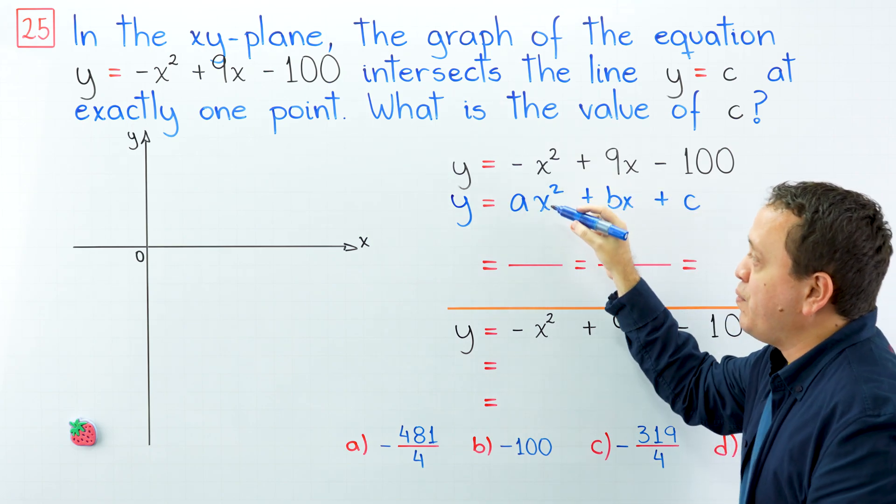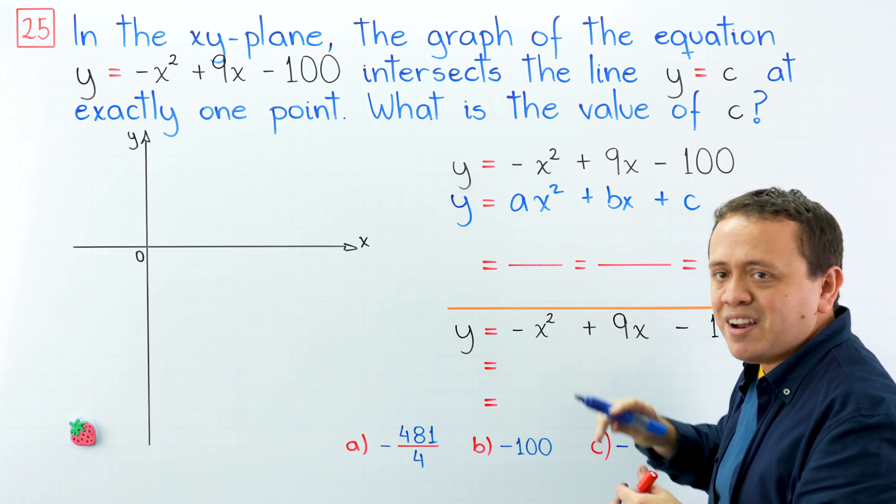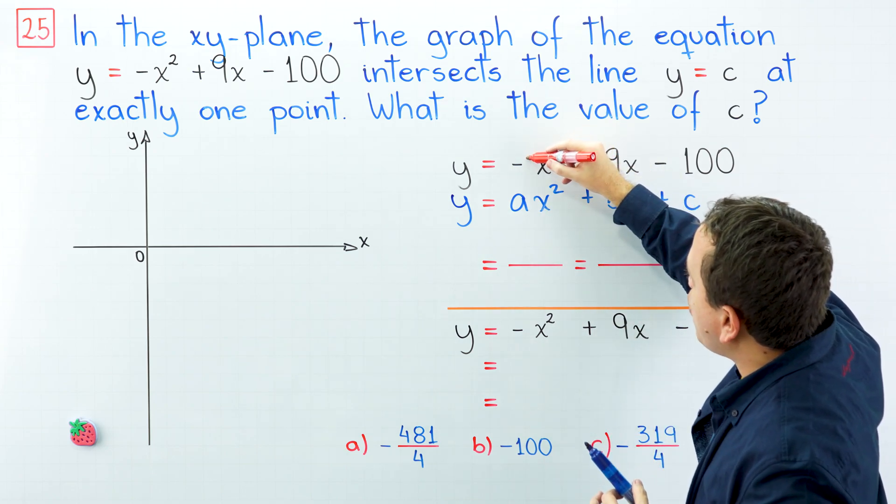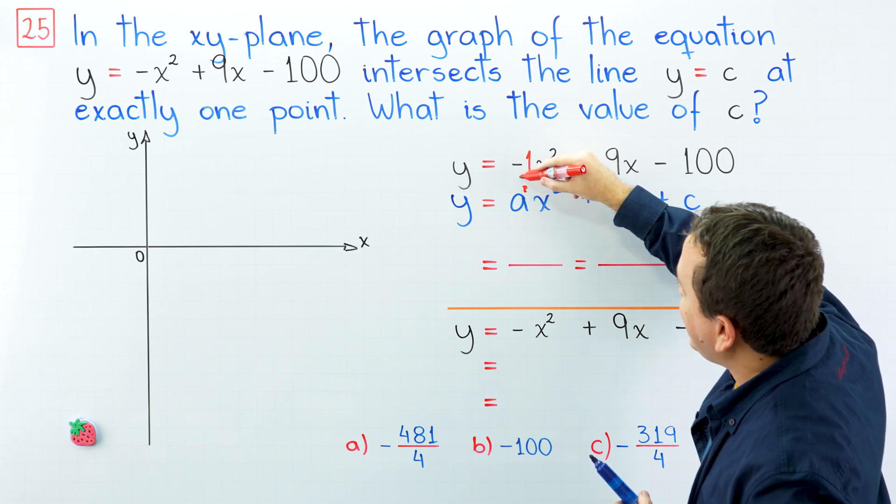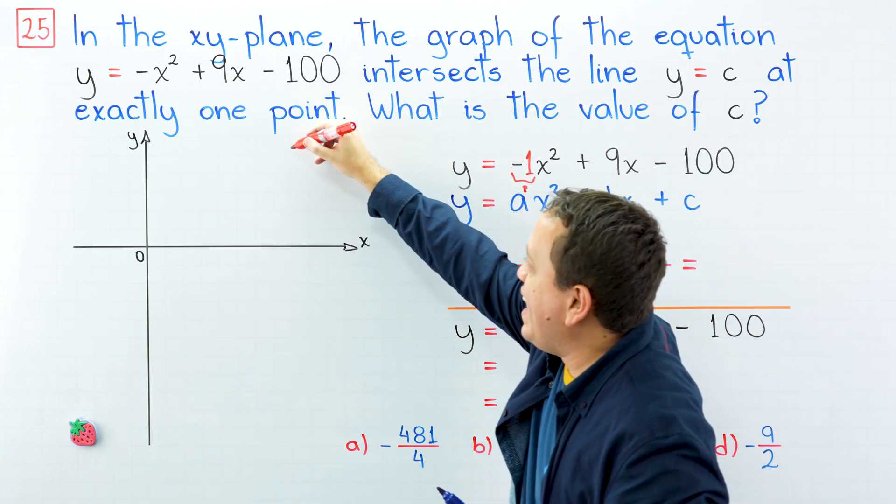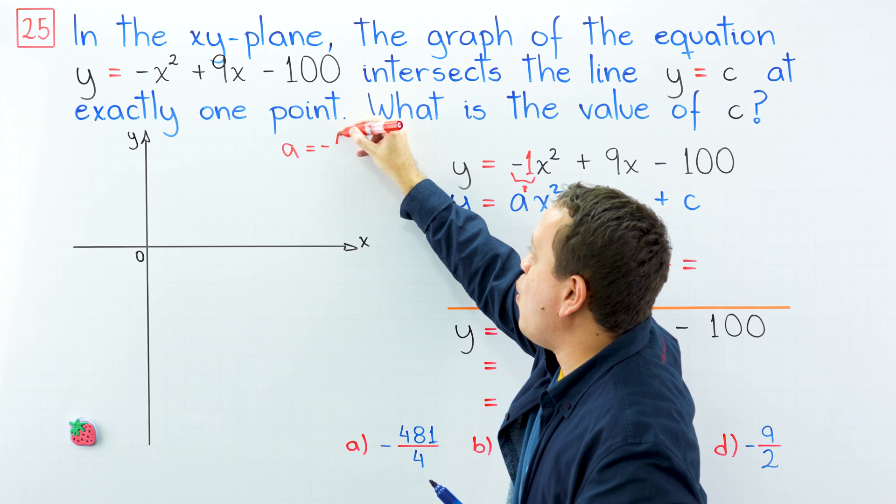Let's find the value of a, the coefficient of the quadratic term. In this case, we have a 1 over here. Therefore, the value of a is -1.